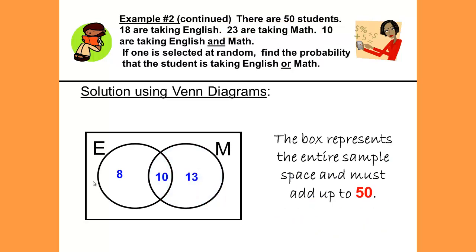The box represents the entire sample space of students which we were told there were 50 students. Notice how we're working backwards here again and the 50 is the last thing that we look at. To find the number of students that are not in either English or math, simply take 50 and subtract the 8, the 10, and the 13, which should leave us the 19 students.